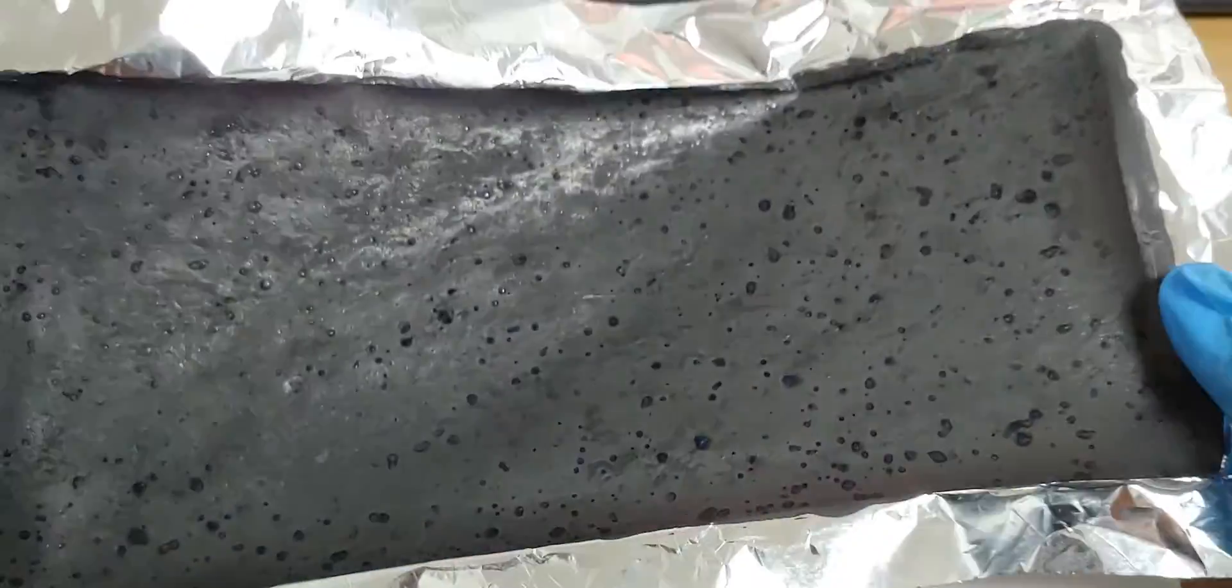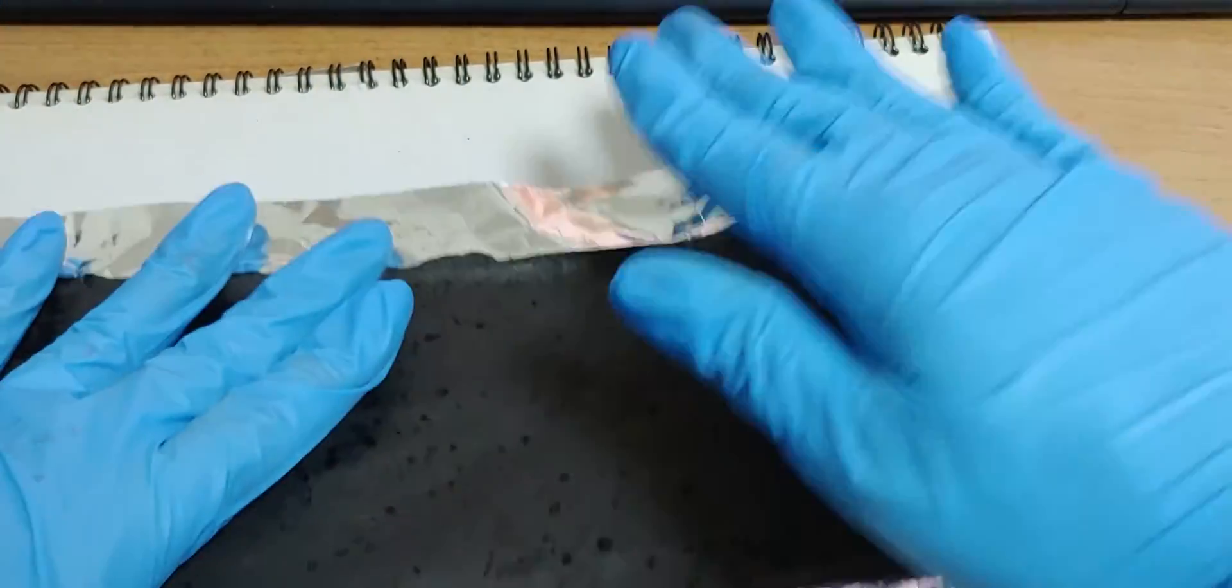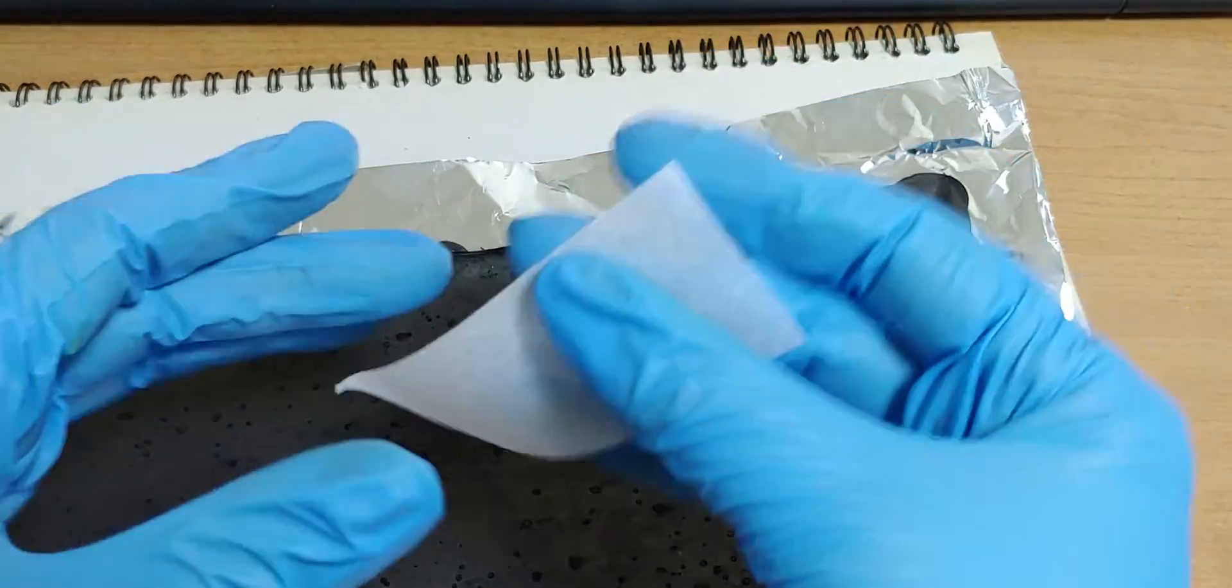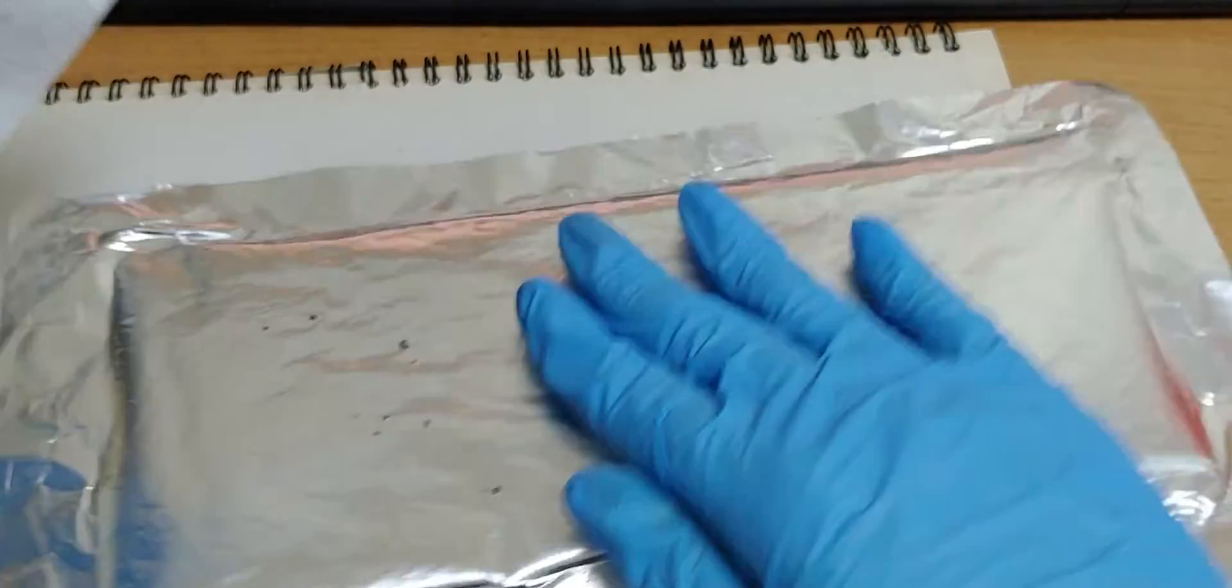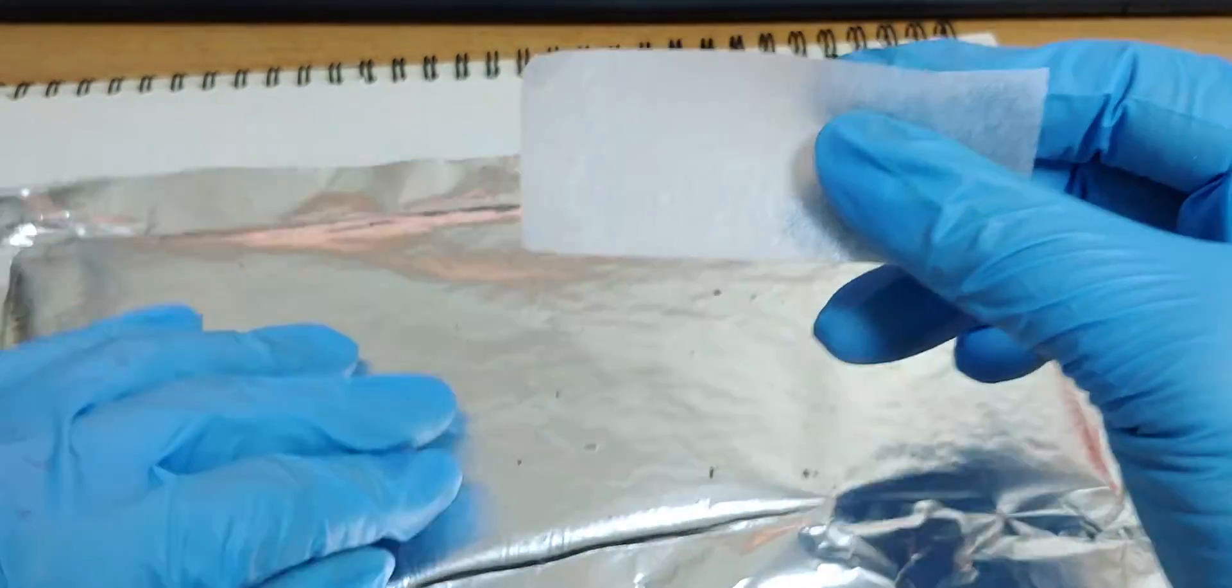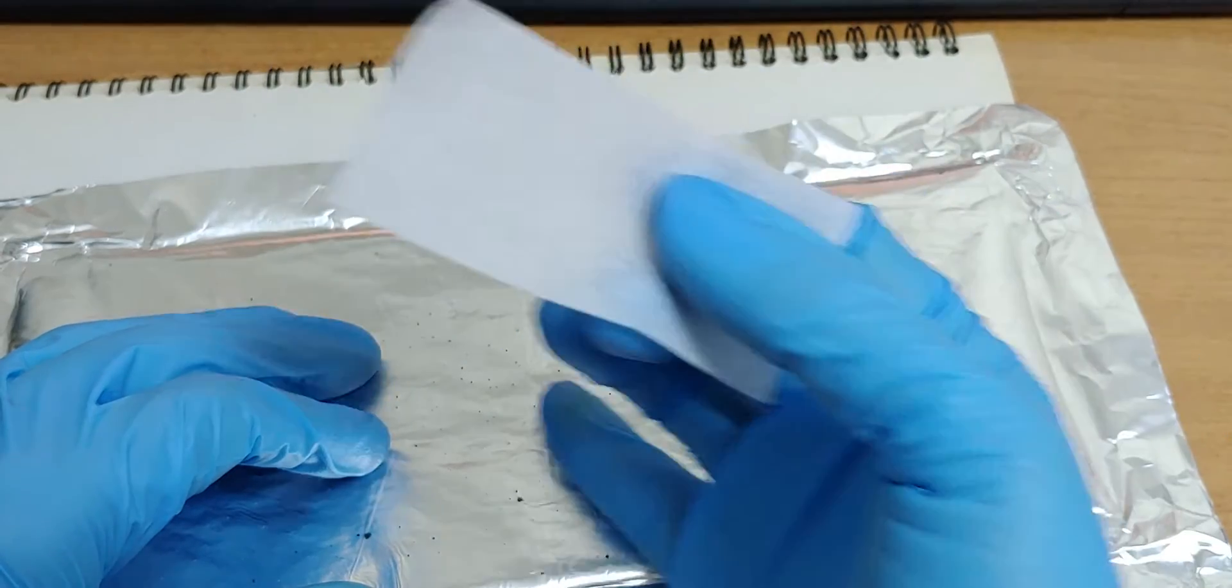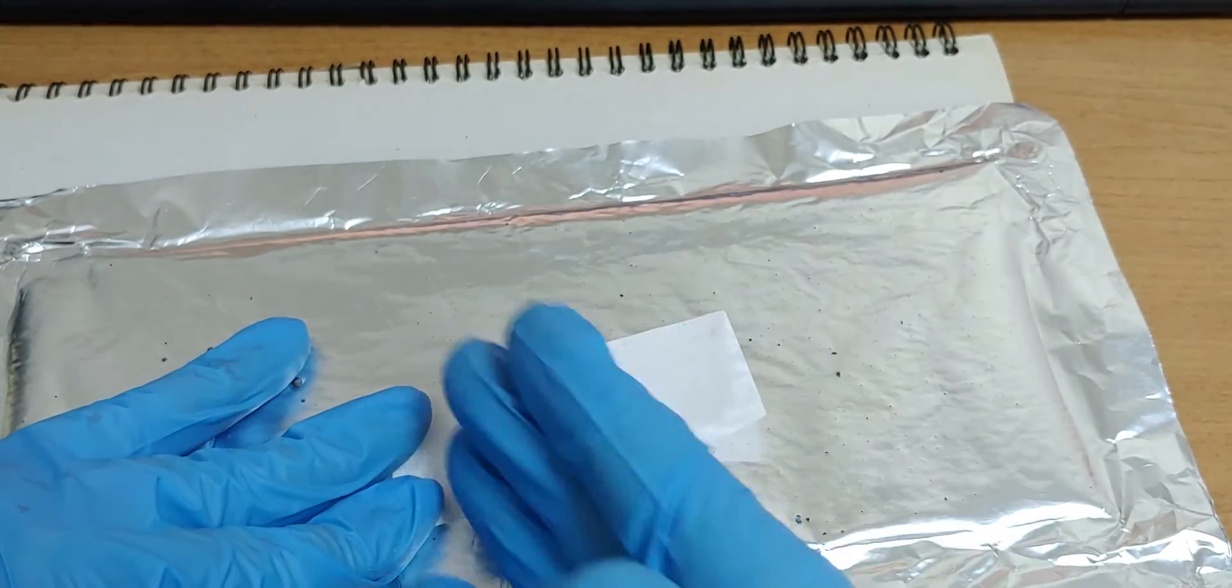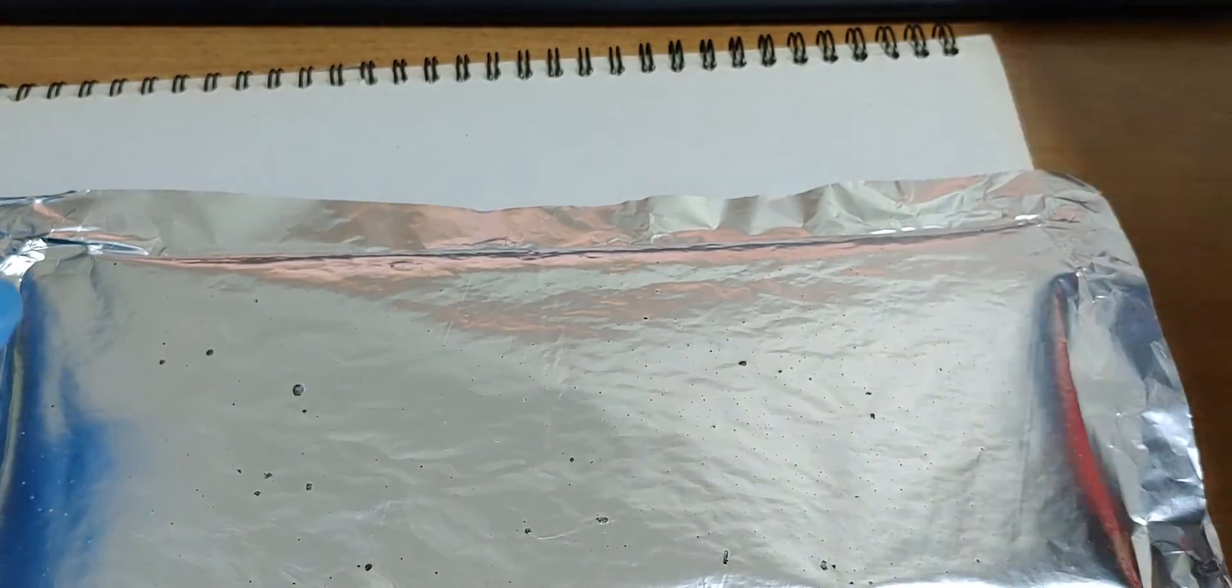And then, this one. I made another electrode by using this paper. For example, I pasted some graphene solution here and attached this paper and paste it again. And this is the result.